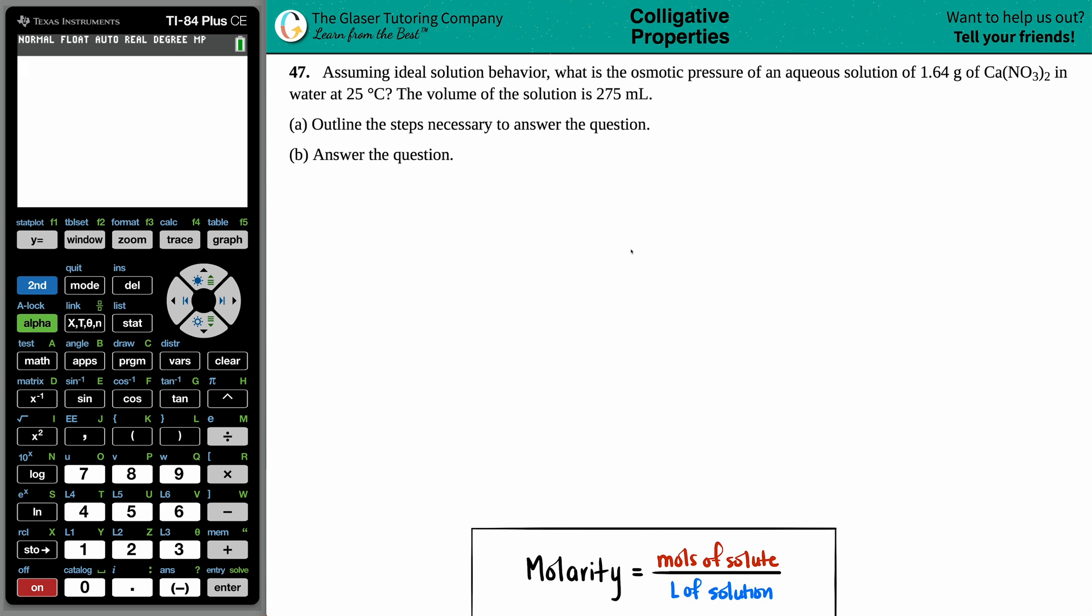Number 47. Assuming ideal solution behavior, what is the osmotic pressure of an aqueous solution of 1.64 grams of Ca(NO3)2 in water at 25 degrees Celsius, and the volume of this solution is 275 milliliters? We need to outline the steps necessary to answer the question and then answer the question.